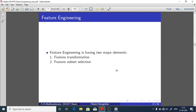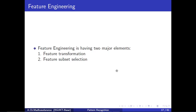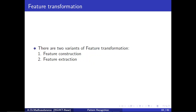Good morning. Today we are going to discuss briefly about feature transformation. Feature engineering has two major elements: number one, feature transformation; number two, feature subset selection. And there are two variants of feature transformation: number one, feature construction; number two, feature extraction.